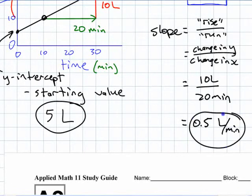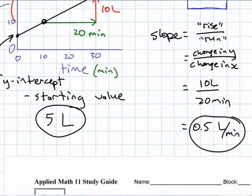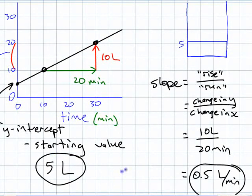This slope represents the rate that that quantity is changing. This amount here, this is starting at five liters, and it's changing at 0.5 liters per minute. The slope is the rate that it's changing at.